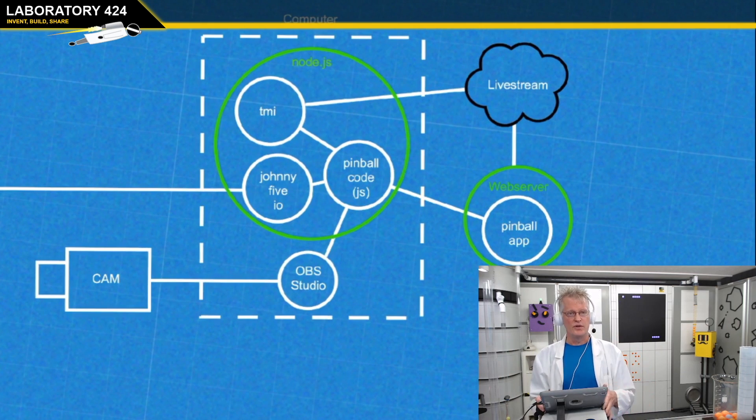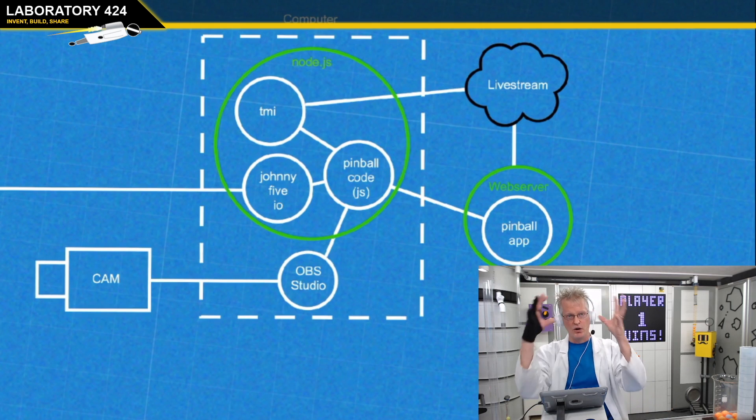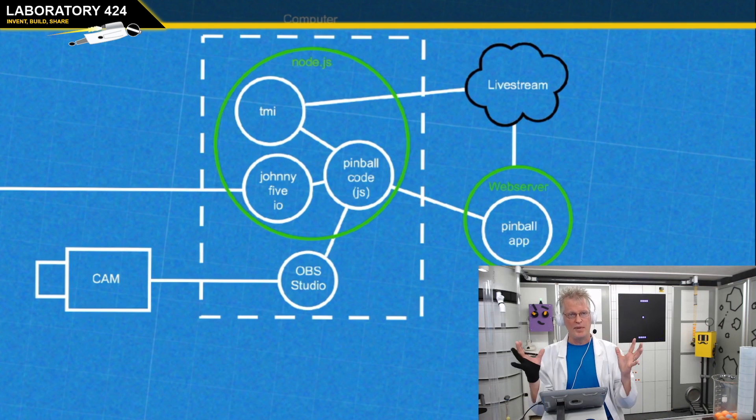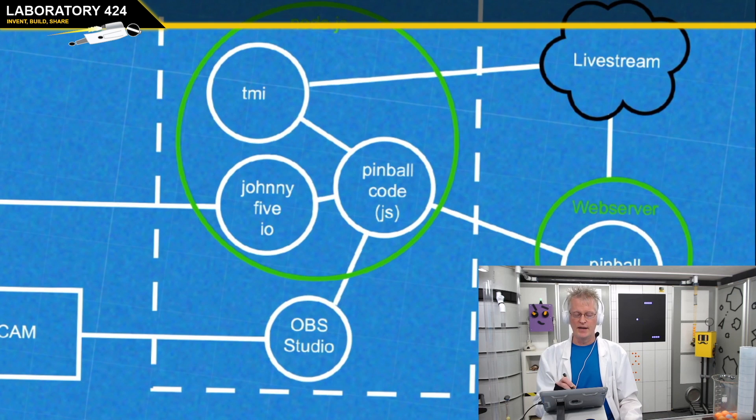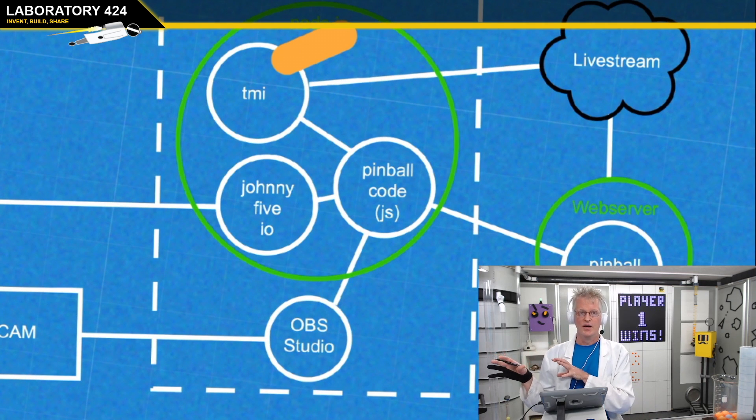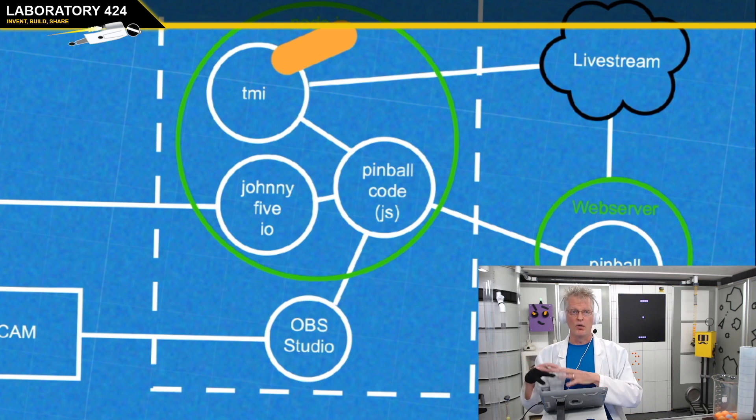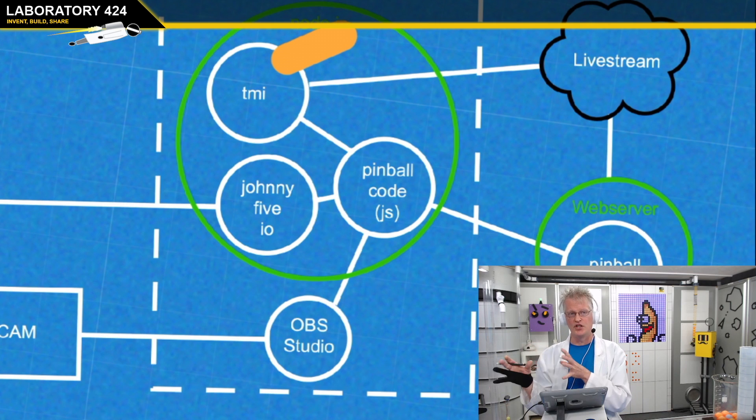So on your computer you install a node server. That's what I do, I have a node server. It's just a software package that runs a little server. And the node server runs JavaScript modules and JavaScript code. So you can write code to control stuff. And then you install something called TMI.js. TMI.js allows you to talk to Twitch in this case. You would install something similar or write your own code to talk to YouTube or whatever platform you're streaming on. So some way to talk to chat.